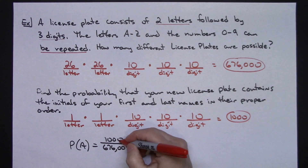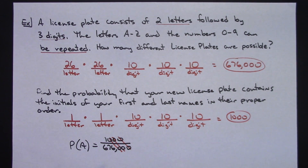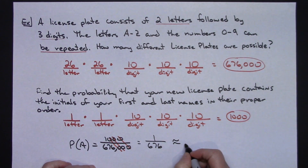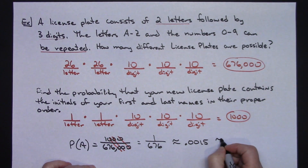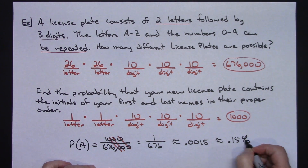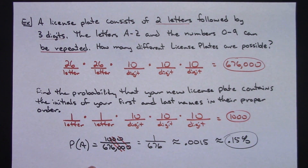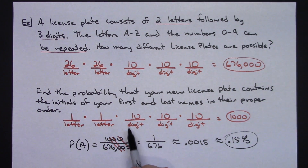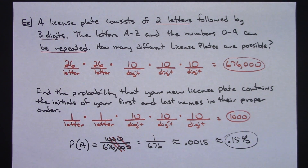Simplifying by crossing out zeros gives 1 over 676. As a decimal, that's approximately 0.0015, which is about 0.15 percent. So there is a 0.15 percent chance that when you get your new license plate, your first and last name initials will be the first two letters.